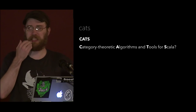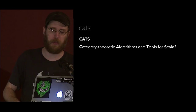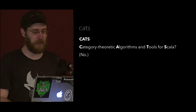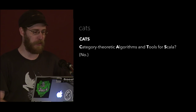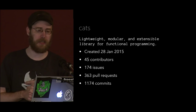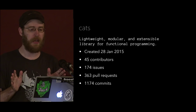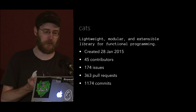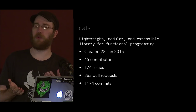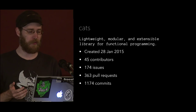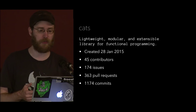So what is Cats? It's actually just a playful shortening of the word 'category,' so it doesn't have any higher meaning than that — and the fact that we get to use cat pictures. The description on GitHub says it's a lightweight, modular, and extensible library for functional programming. After this talk, you can be the judge of whether those things are true. It was created about nine months ago, and we've had 45 contributors, 174 issues opened, 363 pull requests, and just over 1,000 commits.